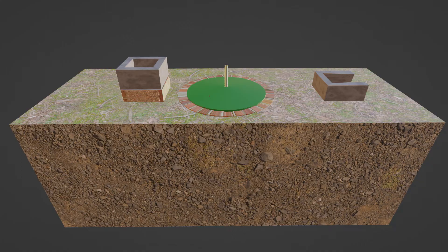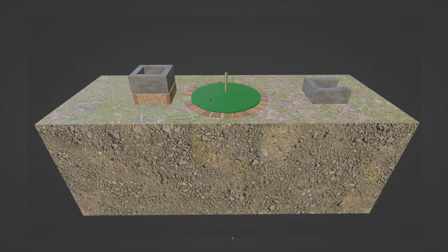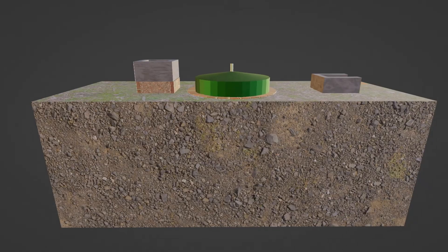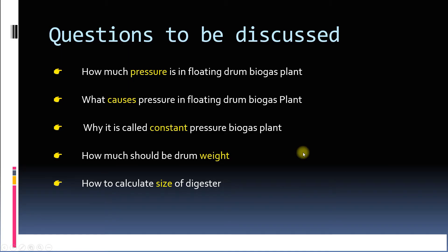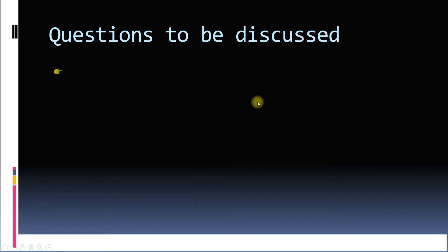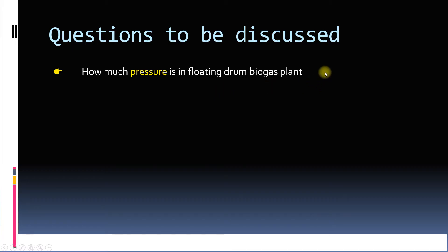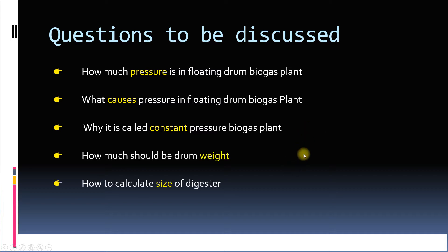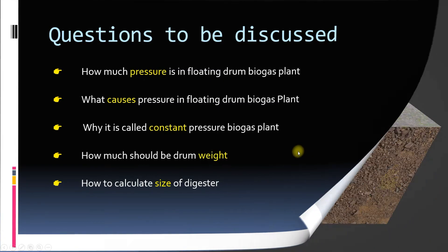Today we are going to discuss the working of a floating drum biogas plant. We will cover these questions: how much pressure is in a floating drum biogas plant, what causes this pressure, why it is called a constant pressure biogas plant, how much the drum should weigh, and how to calculate the size of the digester.